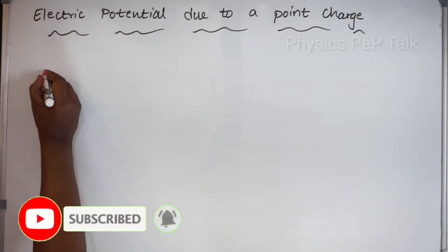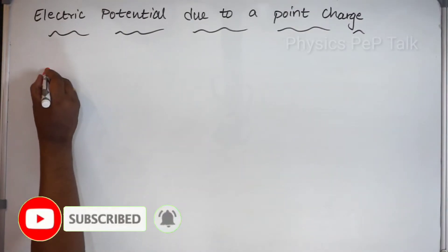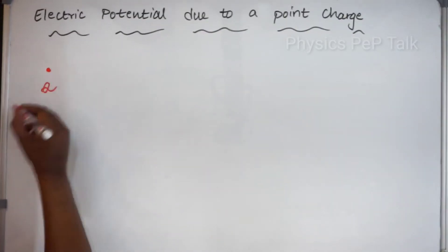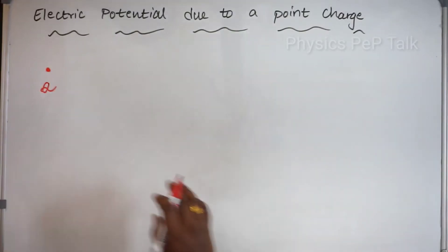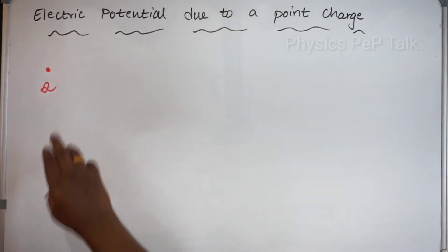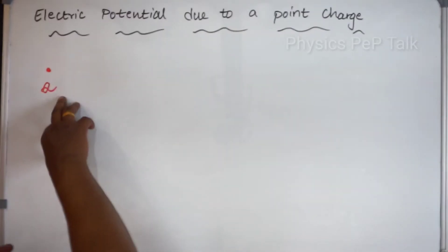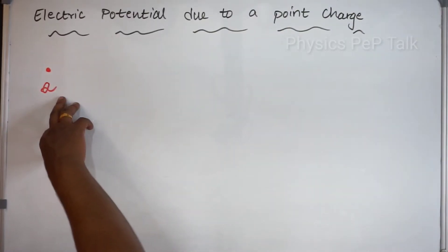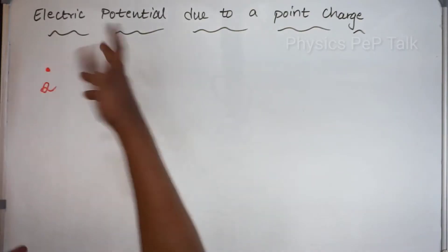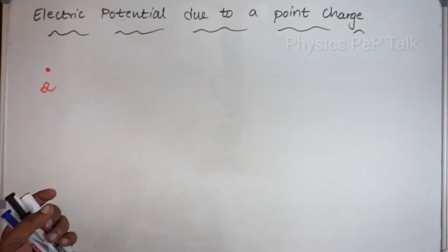First of all, we need to consider a point charge. Let me call this capital Q. This is a positive charge. Because of this positive charge, it will have an electric field radially outwards in all directions.